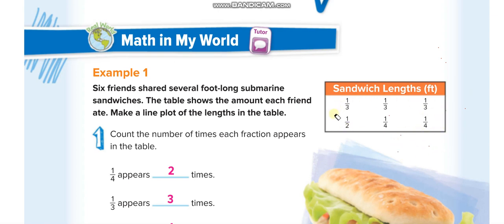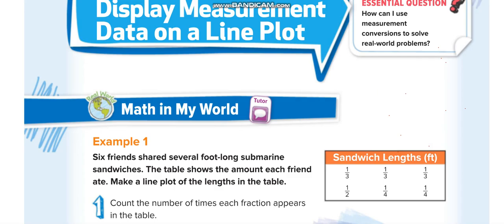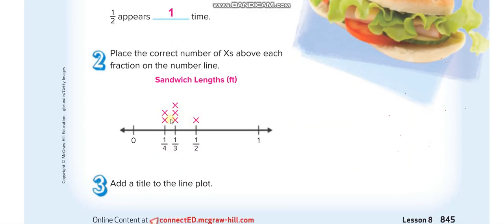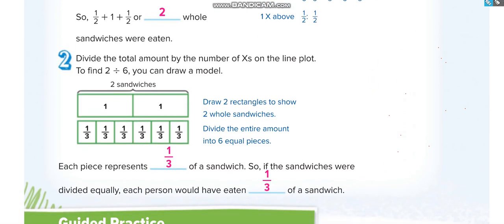When we added all the fractions — you can add same-denominator fractions first then combine the answers, or make all denominators the same and add — we get two whole sandwiches eaten by six friends. So we divide two by six. If given a line plot, count the crosses: one, two, three, four, five, six — two sandwiches divided by six equals two over six, which simplifies to one-third. That is the fair share.